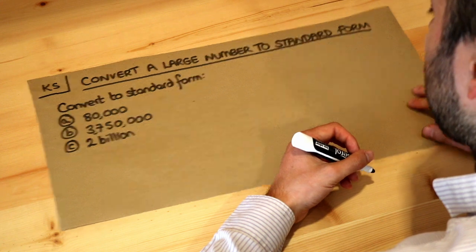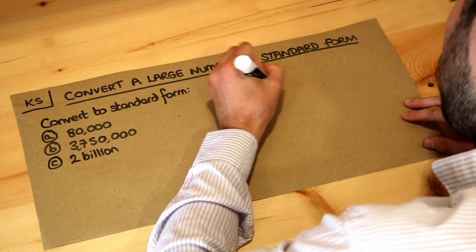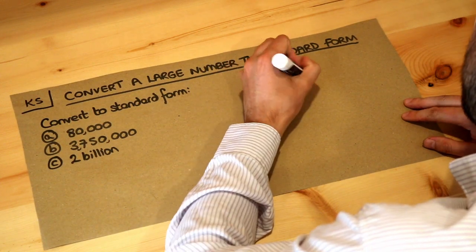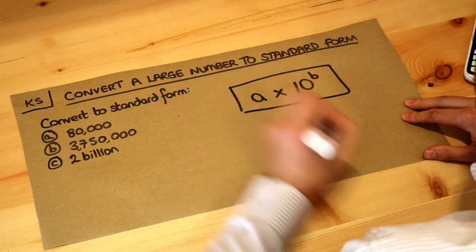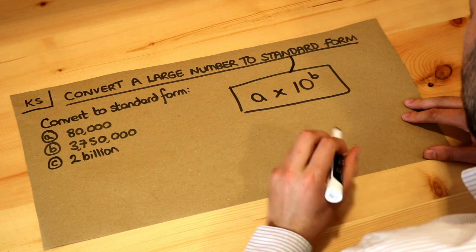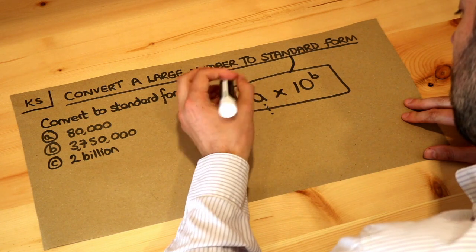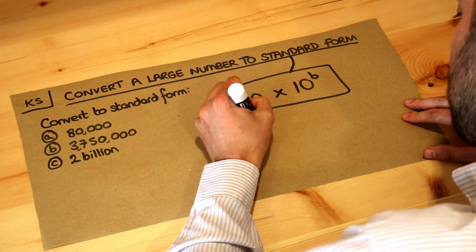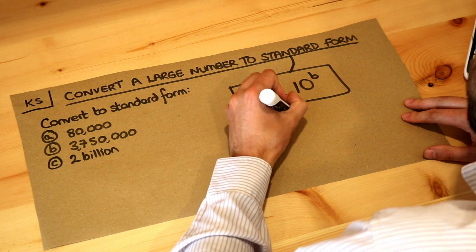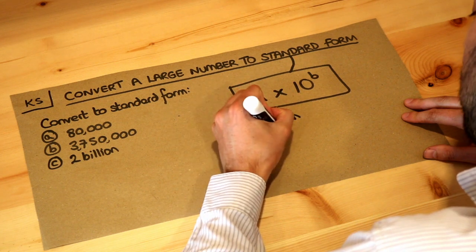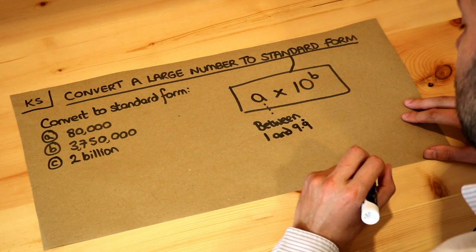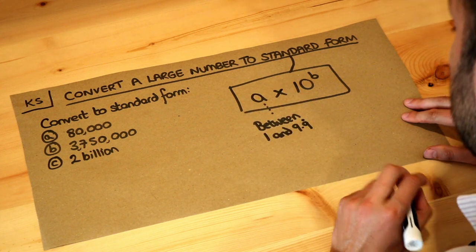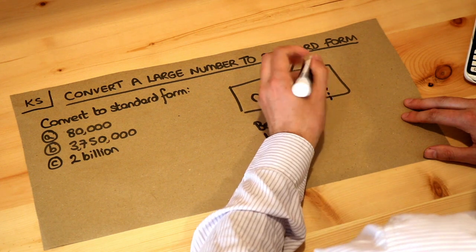To put a number in standard form is to put it in this form: a times 10 to the power of b, where the restrictions are that a has to be between 1 and 10, but not including 10, so between 1 and 9.9 recurring, basically a single digit number maybe with something after the decimal point, and b should be a whole number.